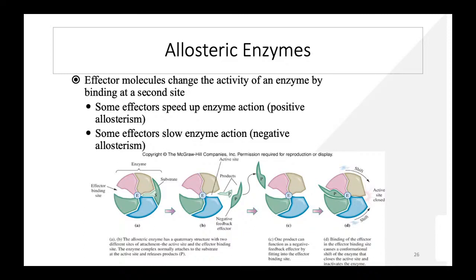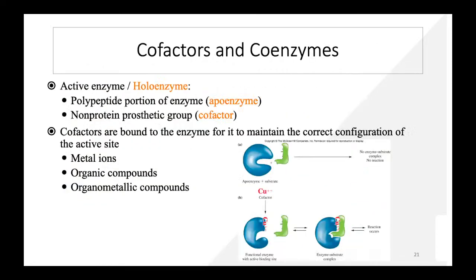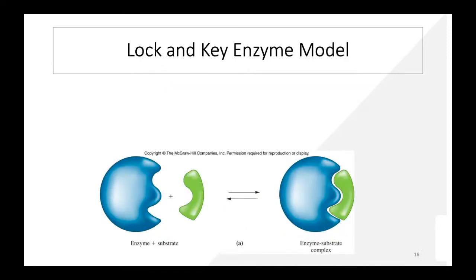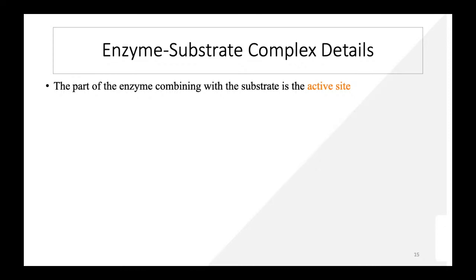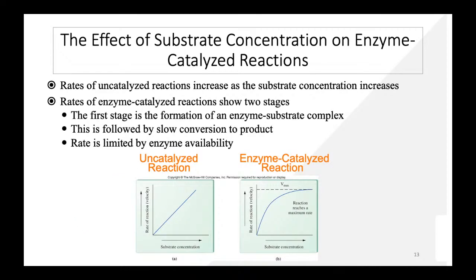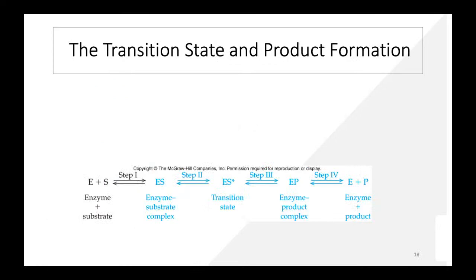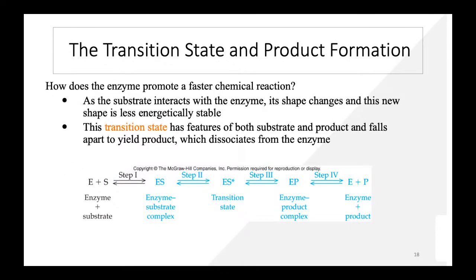Now let's discuss allosteric enzymes. So far we have discussed enzyme mechanisms, classification, enzyme-substrate complex formation, uncatalyzed vs. catalyzed reactions, coenzymes, cofactors, the transition state, and the lock-and-key and induced fit models. Now we move to allosteric enzymes.